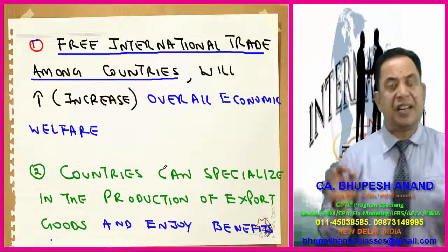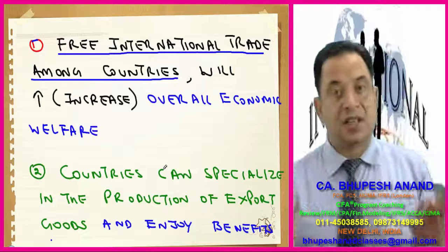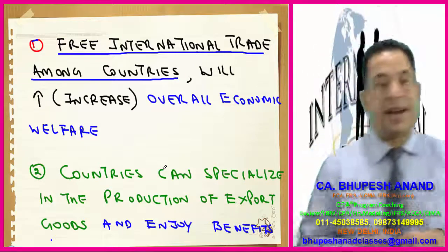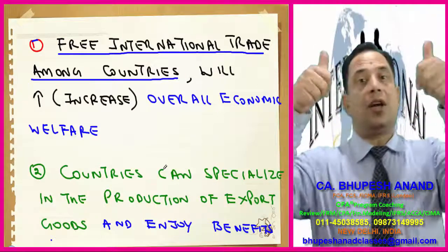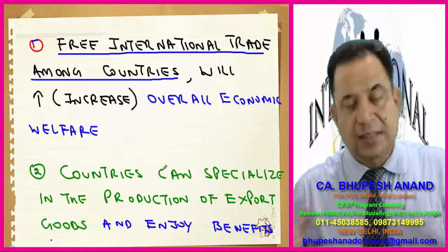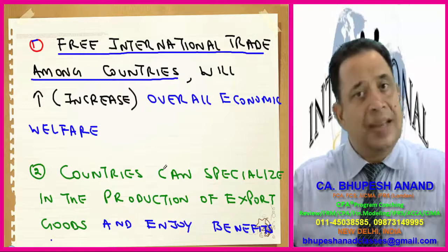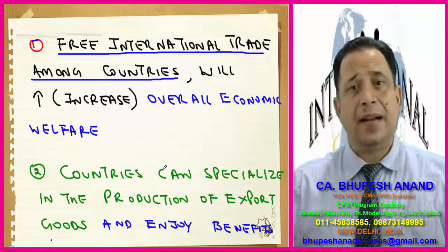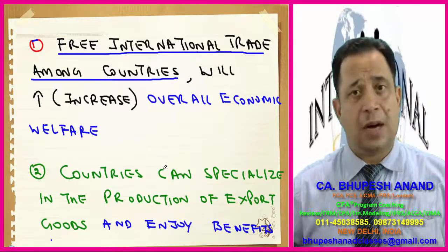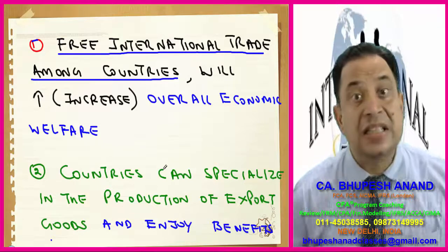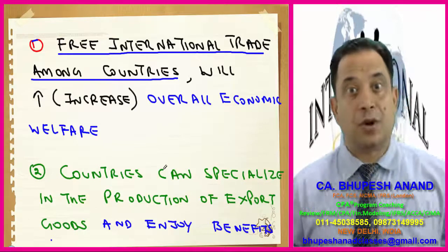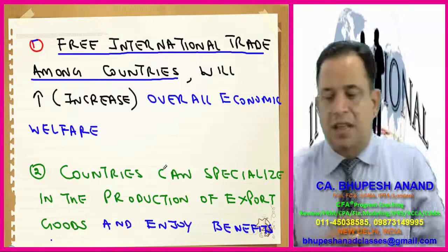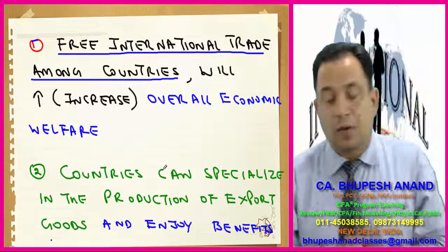The first point is free international trade. Free international trade among countries will increase overall economic welfare — this is the thumb rule. It will be increasing employment, creating opportunities, creating competition, and ultimately the consumer will be beneficial. Cost per unit will come down and resources will be better utilized. Economic welfare will be there.